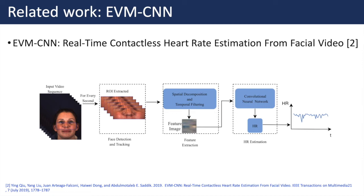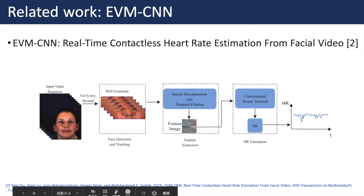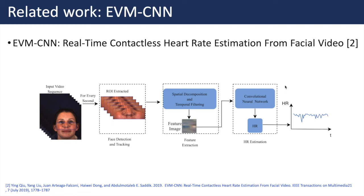In the spatial decomposition step, the input image sequences are first decomposed into multiple spatial frequency bands. Then, the lowest band sequence is reshaped and concatenated to obtain a new image. Next, in the temporal filtering step, a band-pass filter is used to obtain the feature image. The feature image is expected to contain the signal related to blood flow. In the final step, a neural network is used to estimate the final heart rate results.